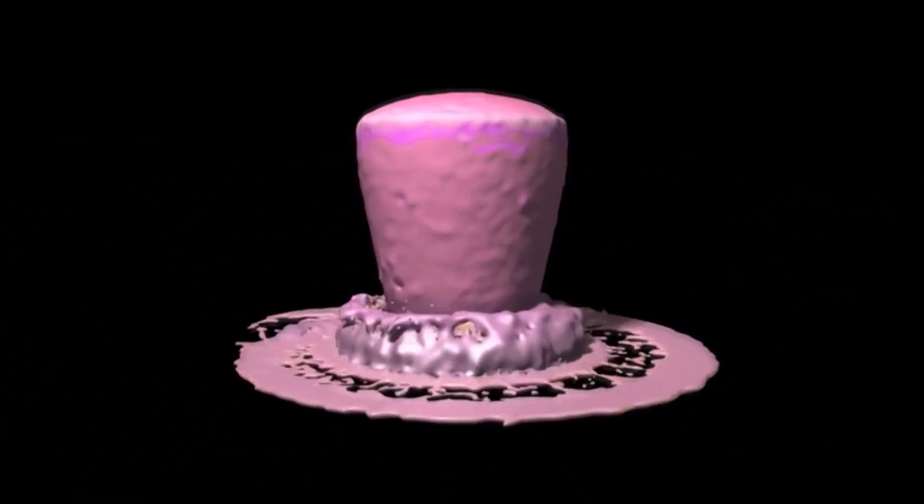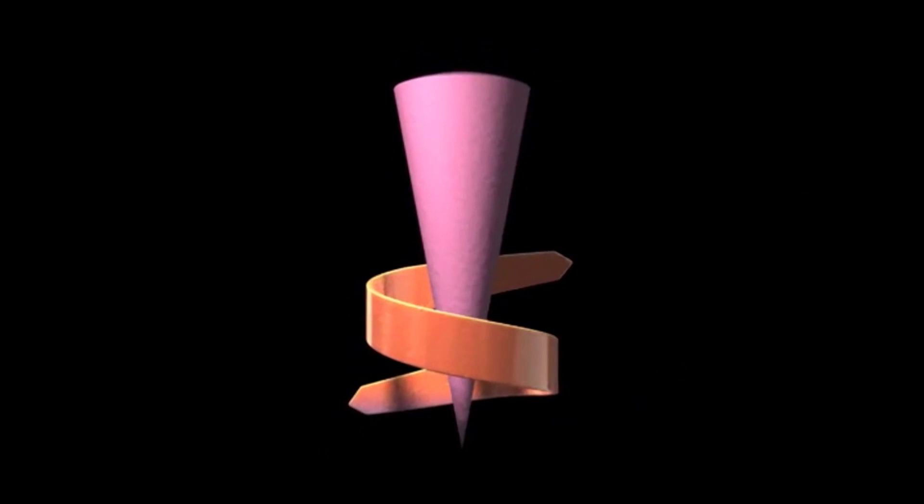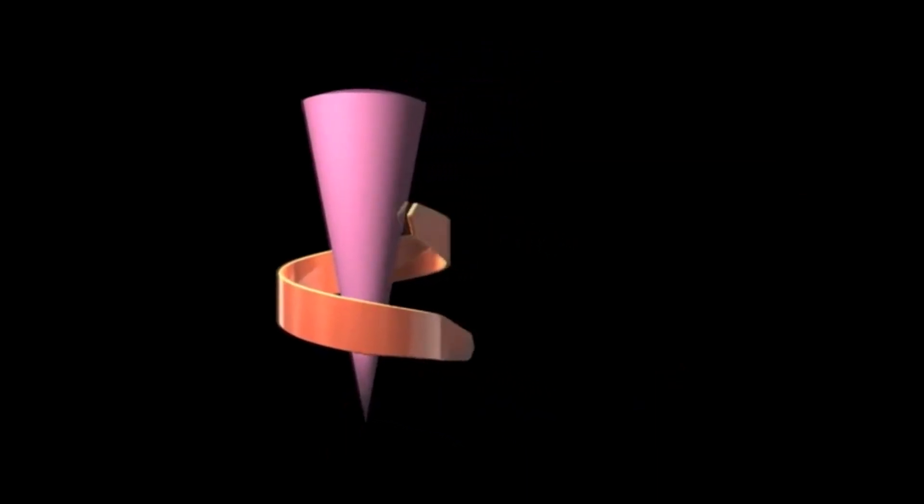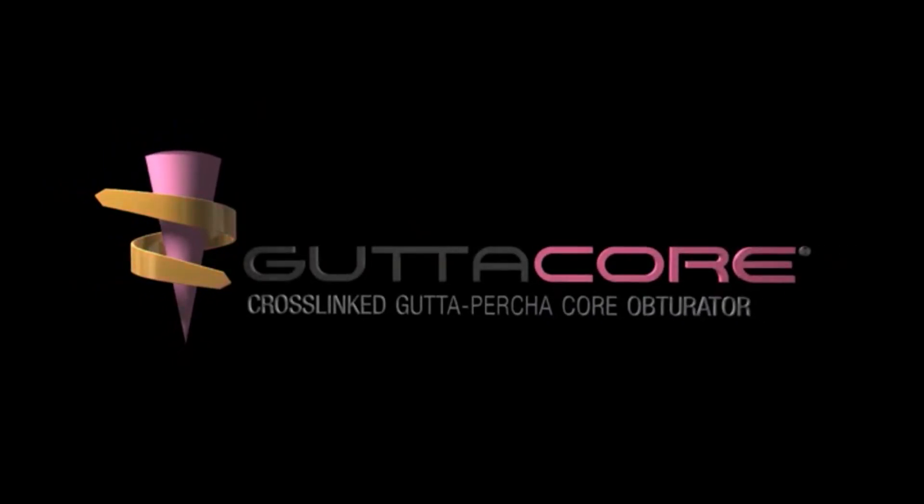What if there was a way to turn warm, flowable Gutta-percha into an easy-to-remove obturator core? Cross-linking technology makes it possible. Introducing GuttaCore Cross-Linked Gutta-percha Core Obturators, because it's what's inside that counts.